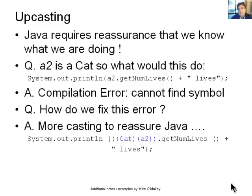And the answer is with more casting to reassure Java. And here's an example here. So we put cat and A2, all in round brackets, and each in round brackets and all in round brackets, and then invoke the getNumberOfLives method. And that just reassures Java that A2 really is a cat, and we want to invoke cat class methods. So Java just needs a bit more hand-holding when you start doing these mixed casts.